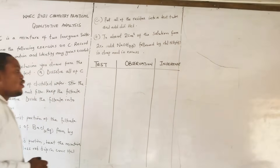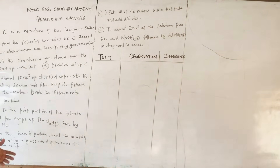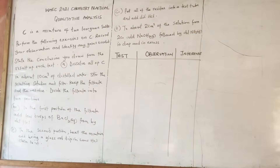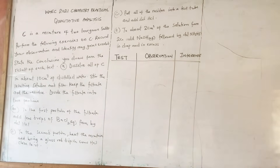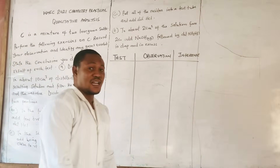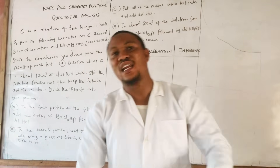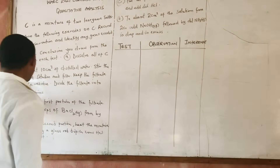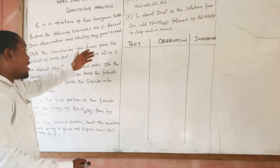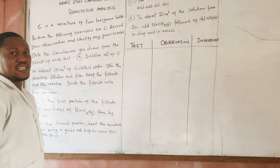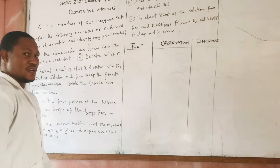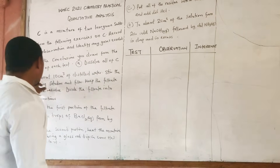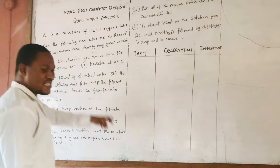All these reagents will be given to us at our center — your barium chloride, your sodium hydroxide, your dilute HCl, your concentrated HCl and so on — and they will be adequately labeled. They said: dissolve all of C in about 10 cm³ of distilled water. For the exam they might use D or E — they are still saying the same thing, but I decided to use C.